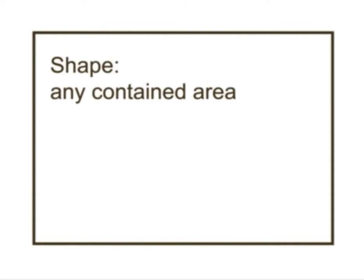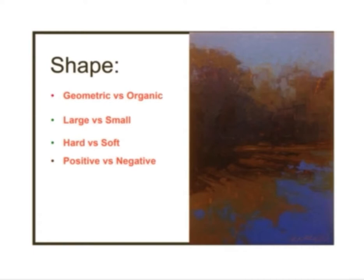Shape is the second of the simple basic elements, defined as any contained area in a composition. It can be contained by a line that wraps around and connects — that's called a contour. It can also be contained by differences in value, color, or texture. Any distinct difference will create a contained area, and thus a shape. Variations in shape include geometric versus organic, large versus small, hard versus soft, and positive versus negative. Geometric shapes have a mathematical definition and are angular, while organic shapes have a lifelike, irregular form.